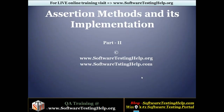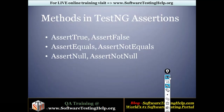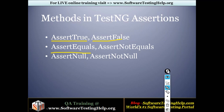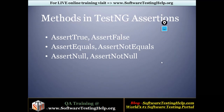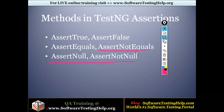Hello everyone, welcome to Software Testing Help. This video is a continuation of assertion methods in TestNG and how to implement them along with Selenium. In the last video we were discussing about assertTrue, assertFalse, and assertEquals methods and how to implement these assertion methods in your test case validation. In today's video we will be discussing about assertNotEquals, assertNull, and assertNotNull, with examples and how to implement each. Let's have a look at these assertions now.